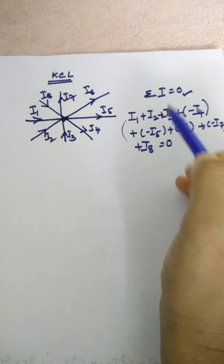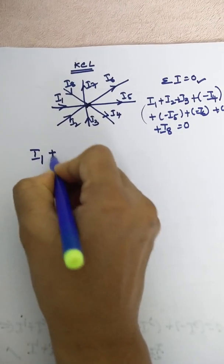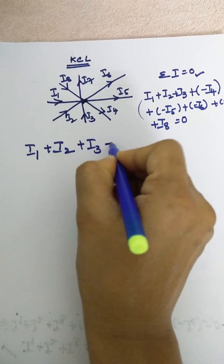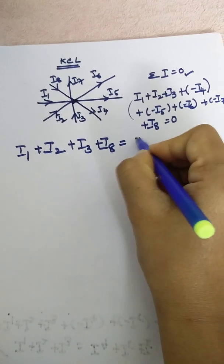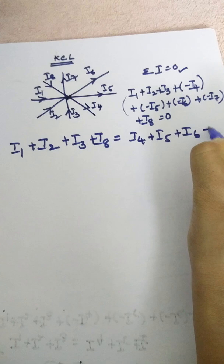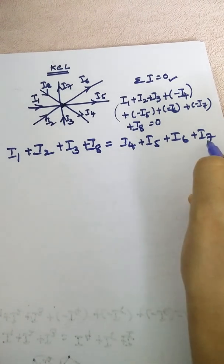We can also rearrange this equation. So this may be rearranged as I1 plus I2 plus I3 plus I8 is equal to I4 plus I5 plus I6 plus I7. These are all entering currents and these are all leaving currents.